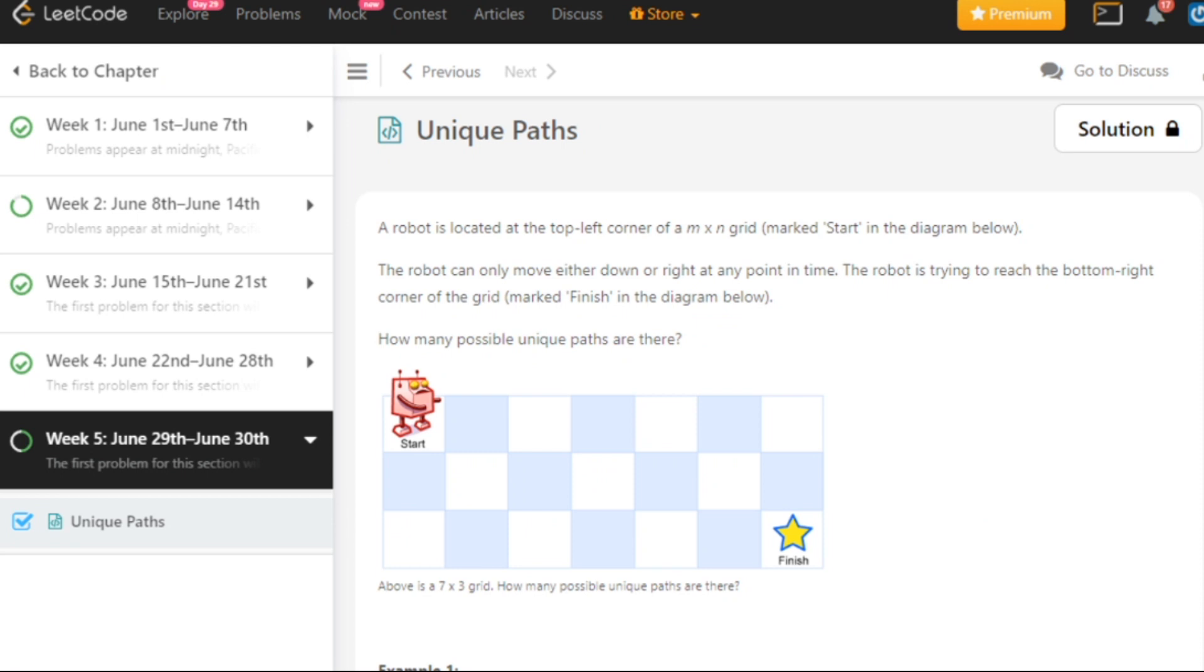Hey everybody, so today's question is Unique Paths. In this we have given a grid of m into n and we have to tell how many unique paths are there to go from the left top corner to the bottom right corner. Also, we know that we can only move in right and downward direction, so let's see.